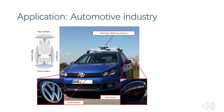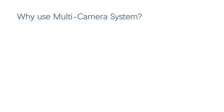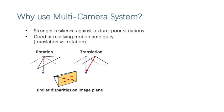So why using multi-camera systems? That is because it has stronger resilience to texture-poor situations comparing with perspective observation. Furthermore, this vision-only system is good at resolving motion ambiguity for translation versus rotation. As shown in this figure, we can see that